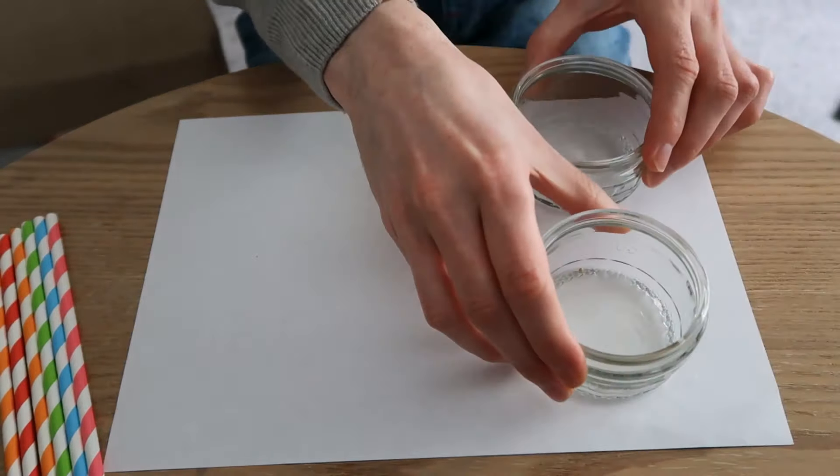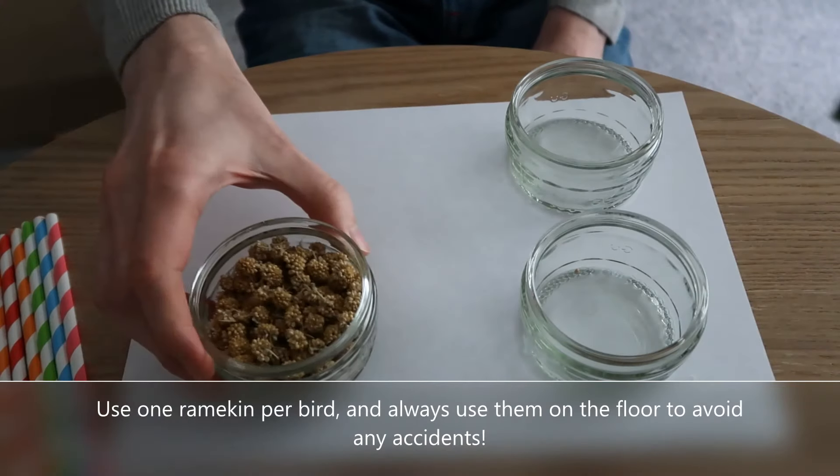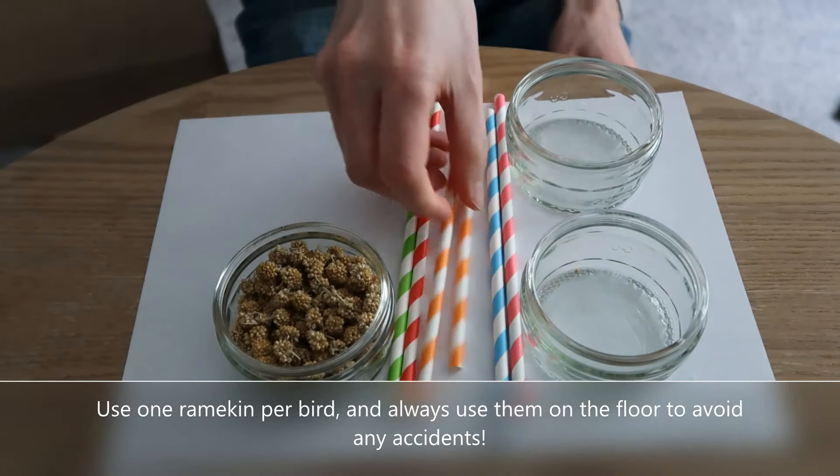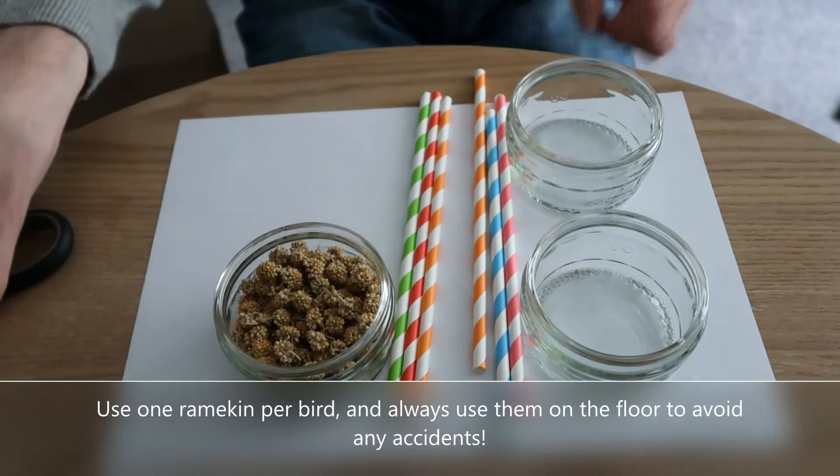So without further ado, let's get started. Before our first DIY bird toy, you're going to need two glass ramekins, your bird's favorite treat—in this case millet—some paper straws, and a pair of scissors.